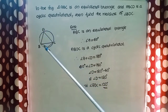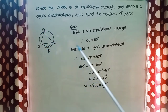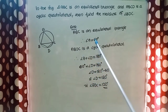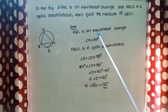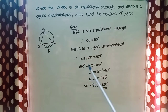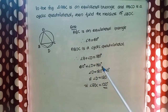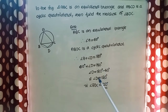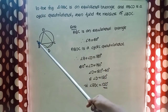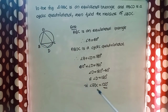Angle A plus angle D equals 180 degrees. We know angle A equals 60 degrees, so 60 degrees plus angle D equals 180 degrees. Angle D equals 180 minus 60, that is angle D equals 120 degrees. Therefore angle BDC equals 120 degrees.